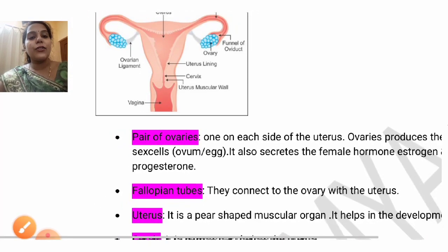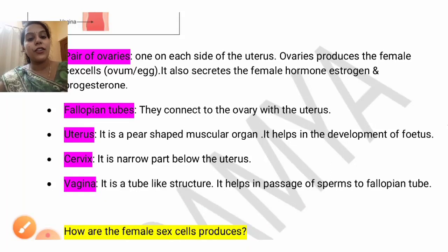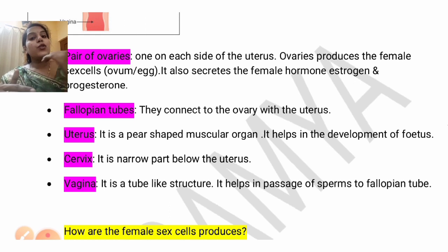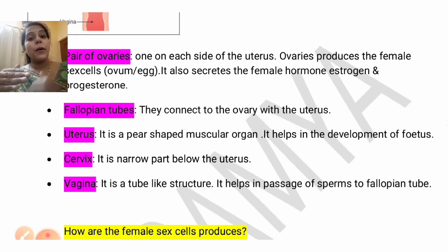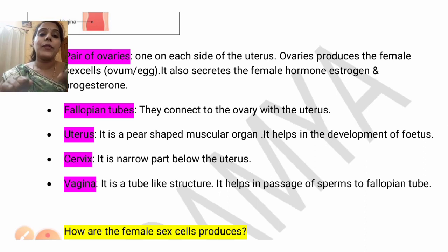You need to write down all the functions. The cervix is a narrow part which extends the uterus. It helps in passing the sperms from the vagina to the fallopian tube to reach the egg.